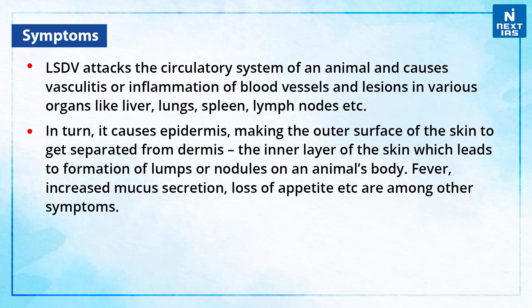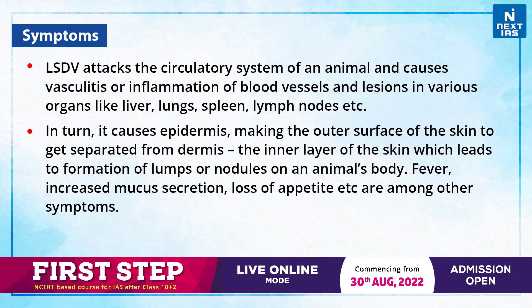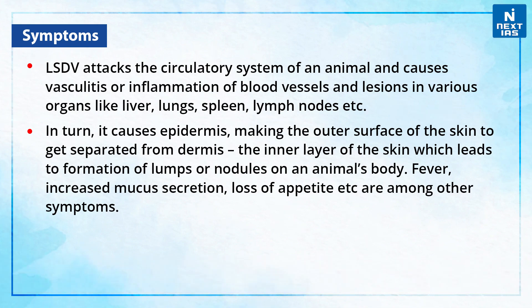Let us discuss some of the symptoms of LSDV. The LSDV attacks the circulatory system of an animal and causes vasculitis, or inflammation of blood vessels, and lesions in various organs like liver, lungs, spleen, and lymph nodes. It causes the epidermis — the outer surface of the skin — to get separated from the dermis, the inner layer, which leads to the formation of lumps or nodules on the animal's body. Fever, increased mucus secretion, and loss of appetite are among other symptoms.